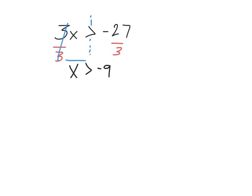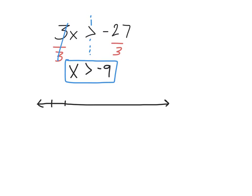So the solutions to my inequality are all numbers greater than negative 9. We draw a horizontal number line with evenly spaced tick marks and use a graph to represent these solutions. Be very careful when numbering a number line on the negative side — sometimes your brain plays tricks on you. With negative 9 near the middle, positive numbers go right: negative 8, negative 7, negative 6, negative 5, negative 4, up towards zero. To the left are more negative numbers: negative 10, negative 11, negative 12, and so on.